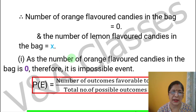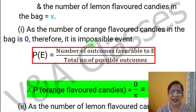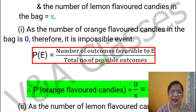Now we will calculate the probability part-wise. For the first part of the question: as the number of orange flavor candies in the bag is zero, therefore it is an impossible event. Obviously, in the bag there is no possibility of orange flavor candies. This means this event is an impossible event. The formula is: probability of the event equals number of outcomes favorable to the event divided by total number of possible outcomes — which gives zero.